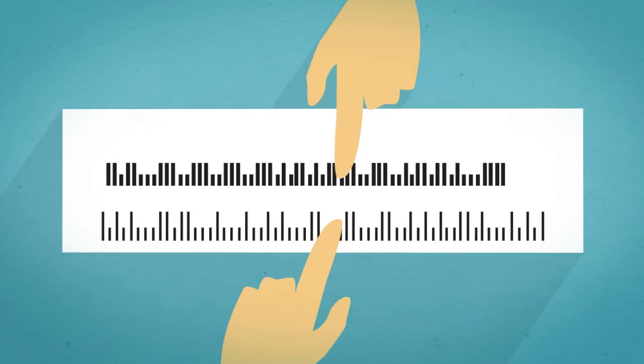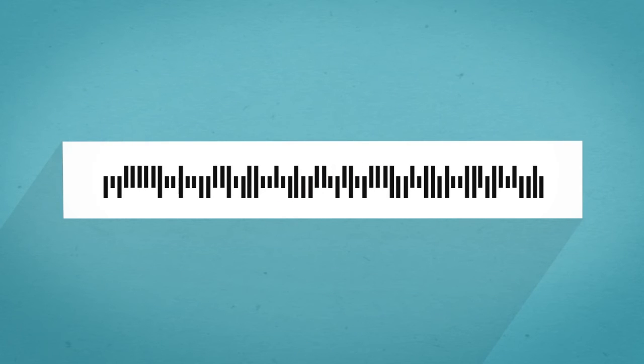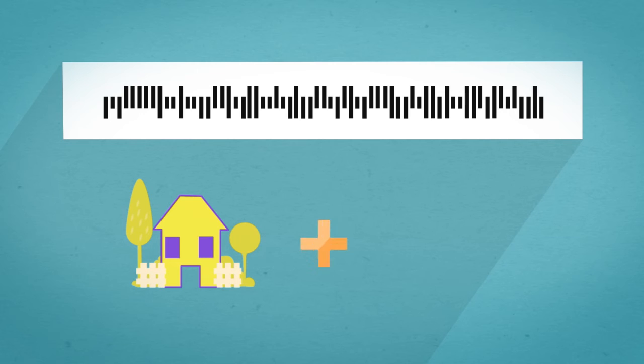Recently, both these codes have been replaced by the intelligent mail barcode, combining the delivery point information of the post-net code with the tracking ability in planet code.